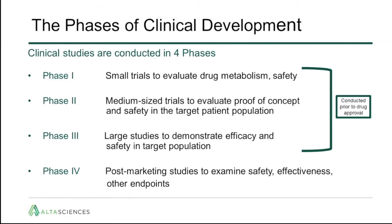The phases of clinical development are essentially partitioned into four phases. Phase one involves small trials that evaluate drug metabolism and safety. Phase two involves medium-sized trials in patients that evaluate proof of concept and safety in the target patient population. Phase three studies are large studies demonstrating that the drug is actually effective for the target patient population. Phase four studies are conducted post-marketing to examine further safety, effectiveness, and other endpoints of interest.